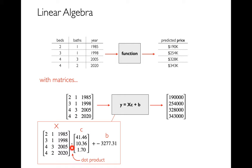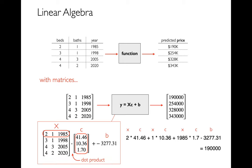This thing I'm looking at is called a dot product. The idea is that we want to multiply the three cells in a row by three coefficients. It's a bit unusual — this goes over, this goes down, but I'm pairing them up. Two goes with 41, one goes with 10 (one times 10.36), and 1985 goes with 1.7. So I'm pairing up each X with a C, multiplying each of those three pieces together, then adding the results. Finally I subtract B, and I get out 190,000 — the first value in the output. That's what happens when I take this first row and multiply it by my coefficients.